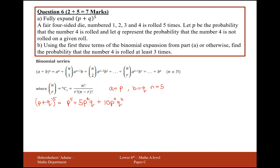The next term is 5 choose 3, which is also 10, times P squared Q cubed. Then 5 choose 4, which is 5, times P times Q to the power of 4. And the last one is 5 choose 5, which is 1, times P to the power of 0 times Q to the power of 5. So Q is going to have a 5 on the end there.